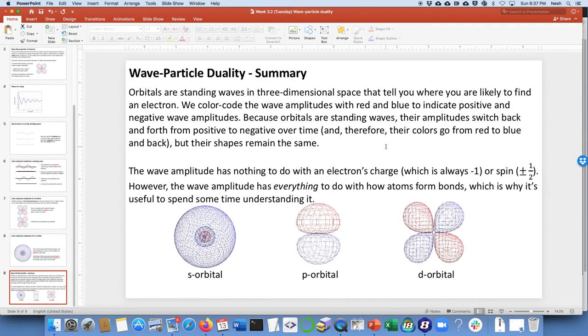To summarize, orbitals are standing waves in a three-dimensional space that tell you where you're likely to find an electron. We color code the wave amplitudes with red and blue to indicate positive and negative wave amplitudes. Because the orbitals are standing waves, their amplitudes switch back and forth from positive and negative over time and therefore go from red to blue to red. But their shapes remain the same, just in the same way that the string did.